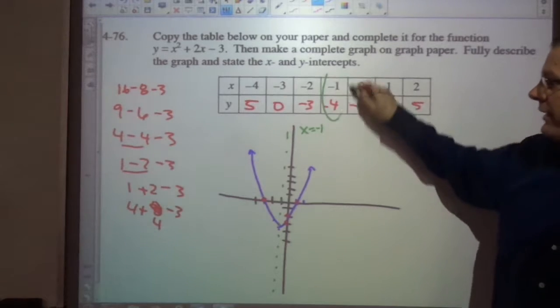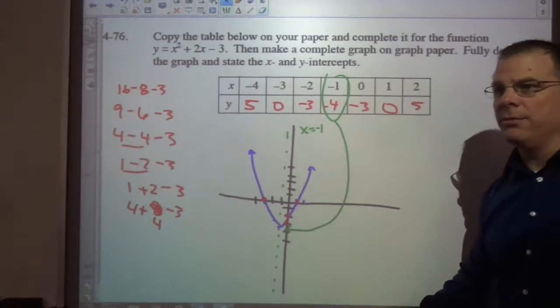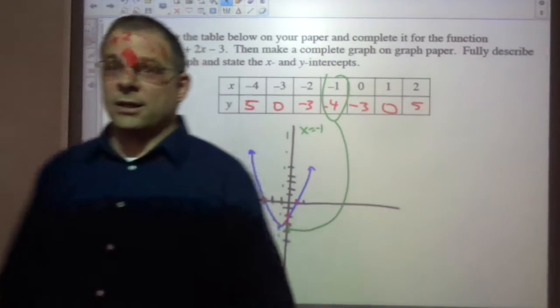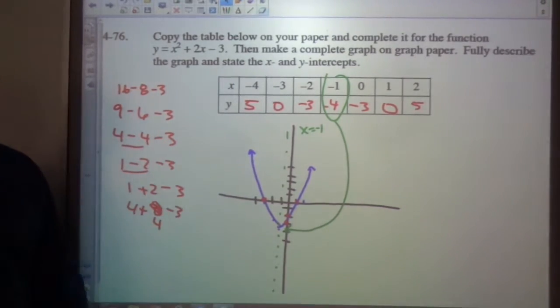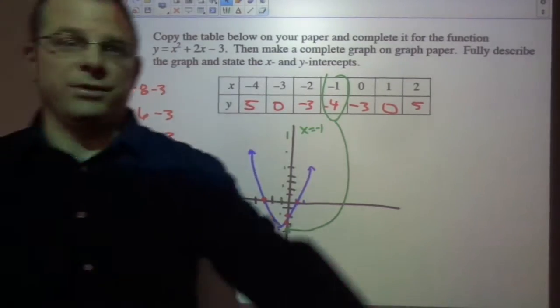What do we call this point? That's the very bottom. You know what that word is for that? It's the vertex. It's the minimum. It's called the vertex. Hope that helps you. Have a great day.